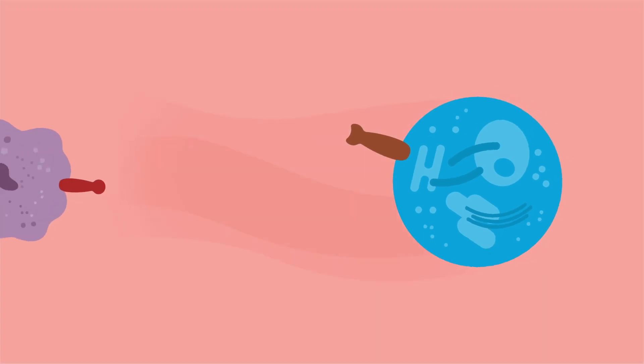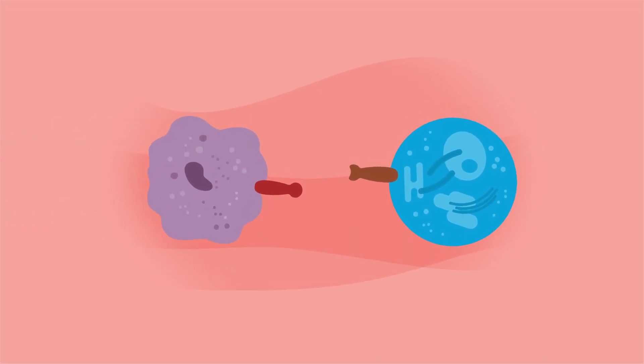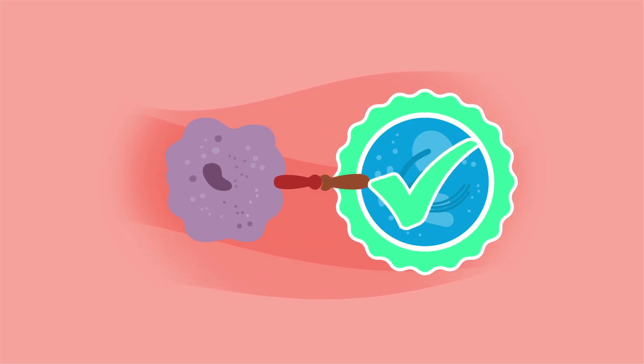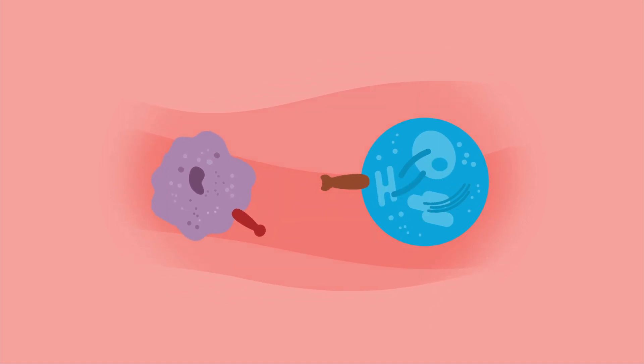Under normal physiological conditions, the SIRPα-CD47 immune checkpoint serves as a don't-eat-me signal. This signal helps maintain the body's immunotolerance and protects healthy cells from being cleared by macrophages.